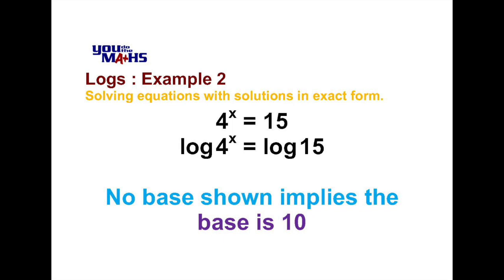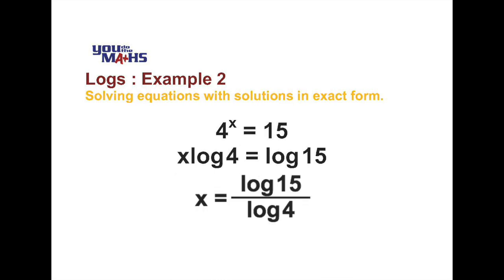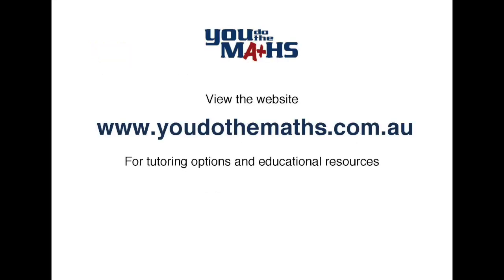From here we can use our log laws. We can remove the x on the left hand side and place it at the front of the log. So we have x log 4 equals log of 15. Then we divide both sides by log 4, giving us x equals log of 15 divided by log of 4, where the base of the logs is 10 in both cases.